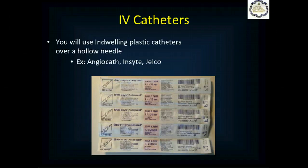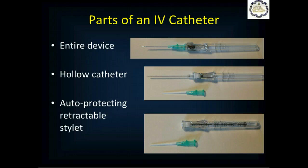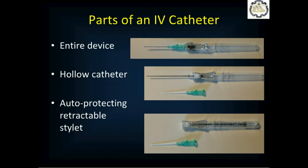You'll need an IV catheter. We use indwelling plastic catheters that go over a hollow metal needle — catheter over the needle. Modern IV catheters are safety catheters engineered to decrease your chances of getting a needle stick. Once the catheter is in the vein, pushing the little white button on top causes the needle to auto-retract backwards into the handle, protecting you from a needle stick.